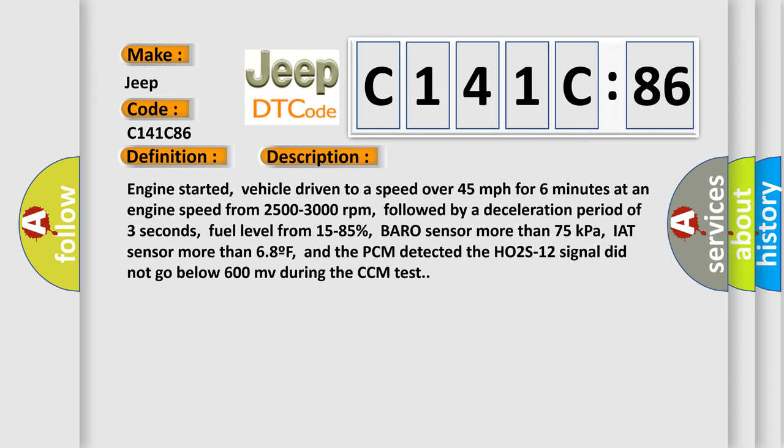Engine started, vehicle driven to a speed over 45 miles per hour for six minutes at an engine speed from 2,500 to 3,000 revolutions per minute, followed by a deceleration period of three seconds. Fuel level from 15 to 85 percent, BARO sensor more than 75 kilopascals, IAT sensor more than 68F, and the PCM detected the H02S12 signal did not go below 600 millivolts during the CCM test.